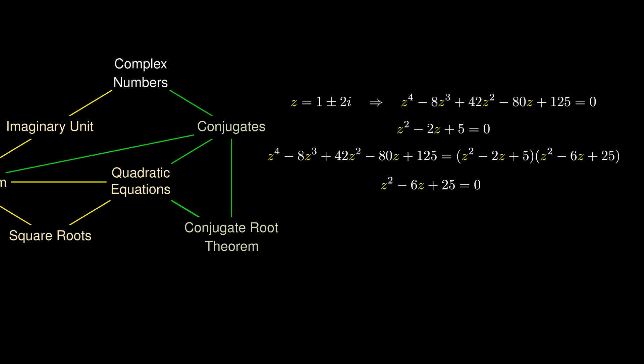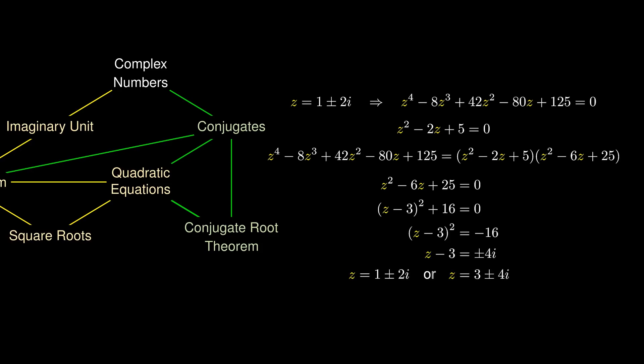While we could use the quadratic formula, we can also complete the square to find that all solutions to the 4th-degree polynomial are 1 + 2i, 1 - 2i, 3 + 4i, and 3 - 4i.